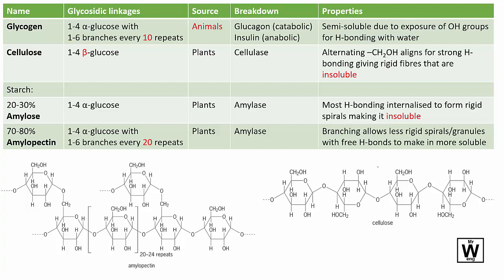The four complex carbohydrates you need to learn are glycogen, cellulose, and starch — which is made up of amylose and amylopectin. All four of these contain glucose molecules.